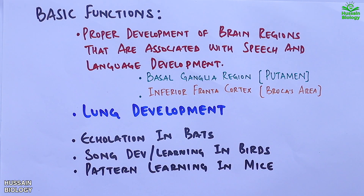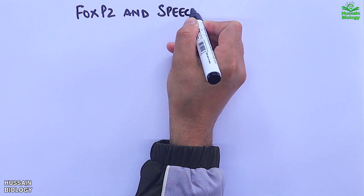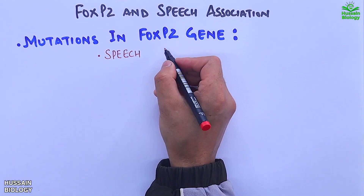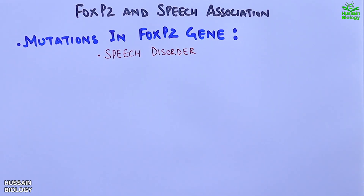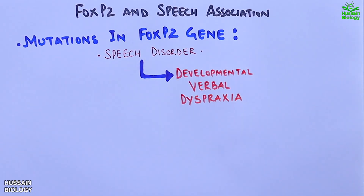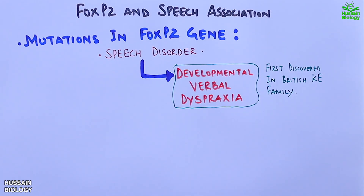We are more concerned about FOXP2 protein being involved in speech development. It is mutations of the FOXP2 gene that lead to speech disorders — what we call developmental verbal dyspraxia. This disorder was first discovered in the British KE family.